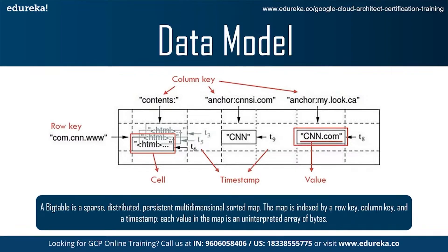The second key type is the column family. Column keys are grouped into sets called column families, which form the basic unit of access control. All data stored in a column family is usually of the same type, and we compress data in the same column family together. A column family must be created before data can be stored under any column key in the family. After a family has been created, any column key within the family can be used. The number of distinct column families in a table should be small — in the hundreds at most — and families rarely change during operation. In contrast, a table may have an unbounded number of columns. A column key is named using the syntax family:qualifier. Column family names must be printable, but qualifiers may be arbitrary strings. An example column family for the web table is 'language', which stores the language in which a web page was written.